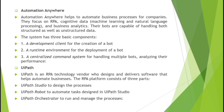Similar to Automation Anywhere, the UiPath RPA platform also consists of three parts. First is UiPath Studio, used to design the processes. Second is UiPath Robot, used to automate the tasks designed in UiPath Studio. Third is UiPath Orchestrator, used to run and manage the processes.